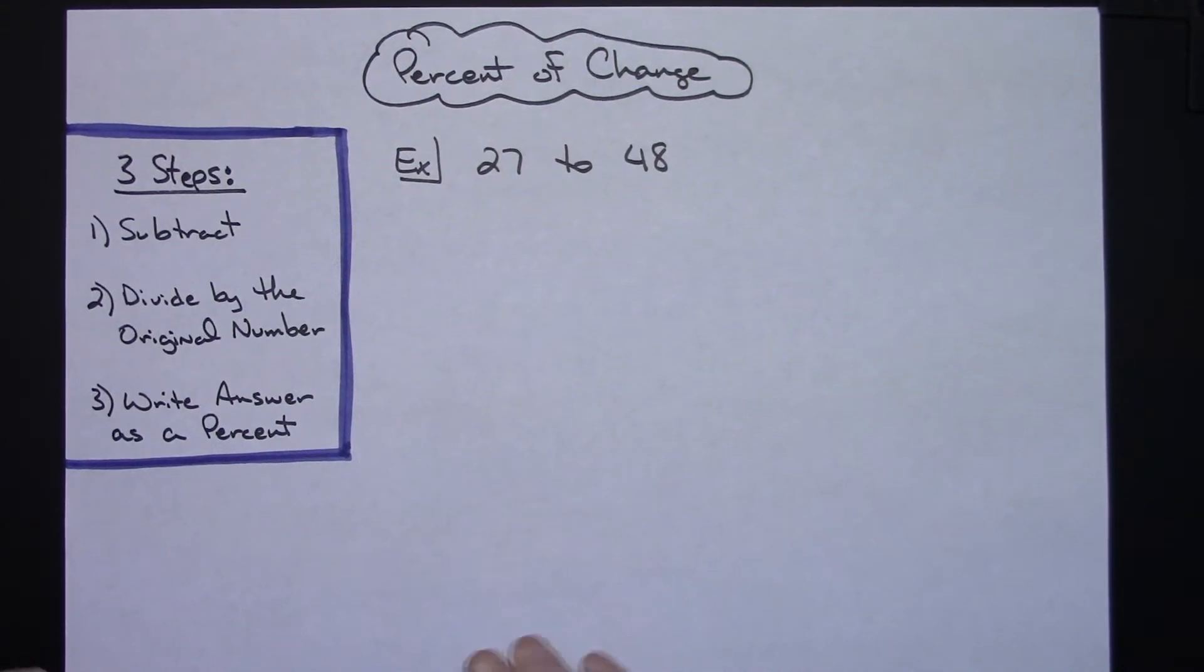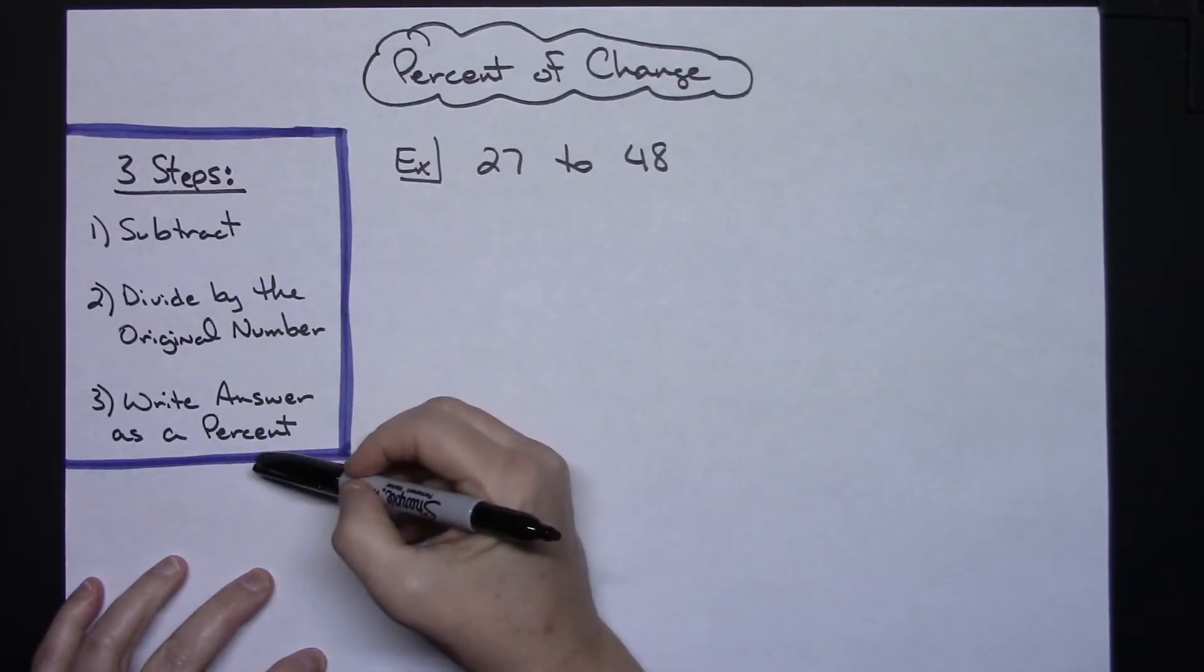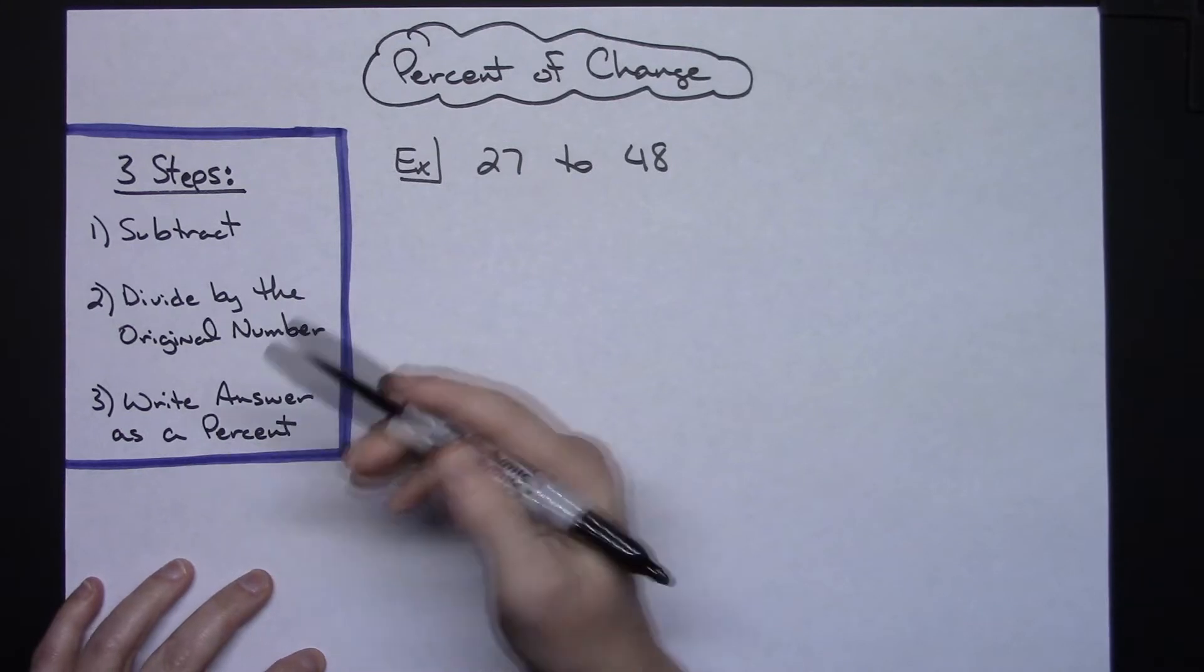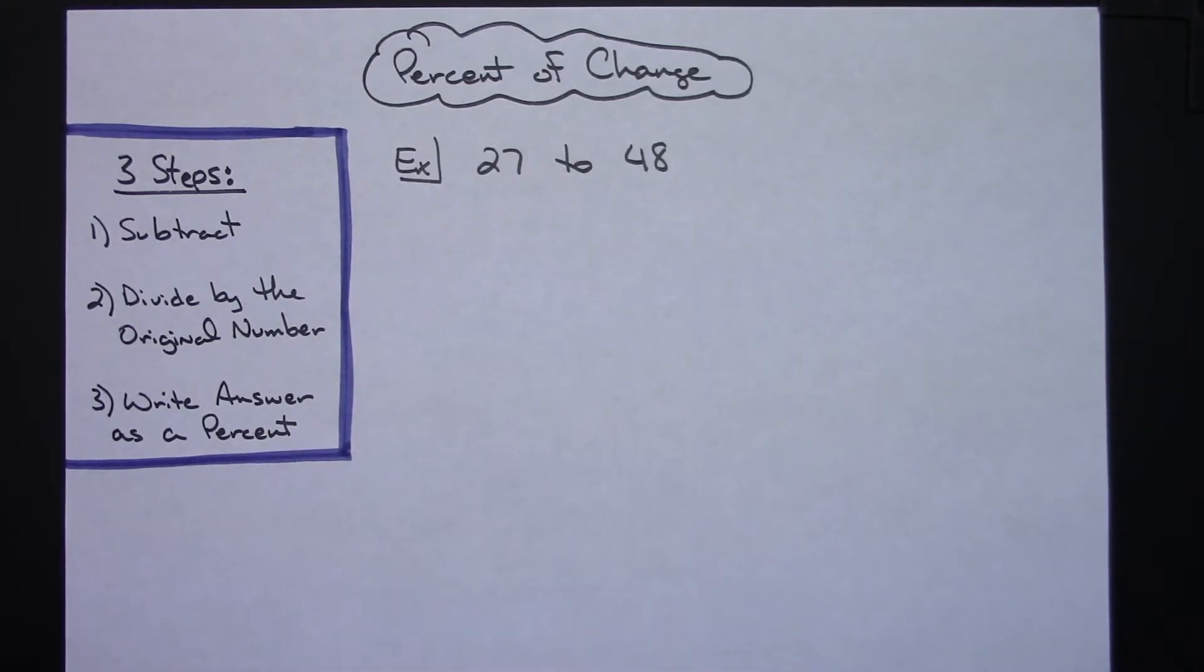In this video I'm going to do one example to show you how to find the percent of change. We're going to follow three simple steps in order to do that, and our percent of change here will not be in the context of a story problem, it's just going to be in the context of a relationship of two numbers.